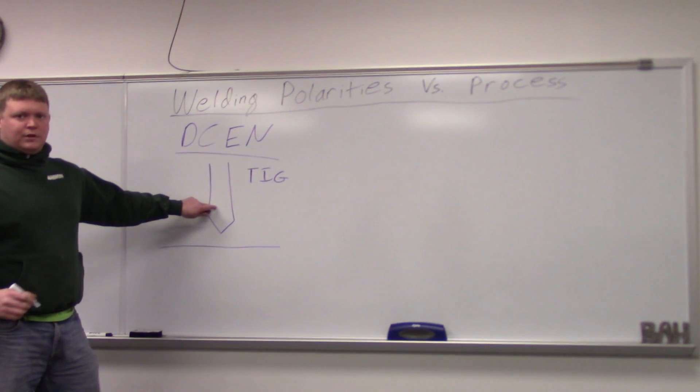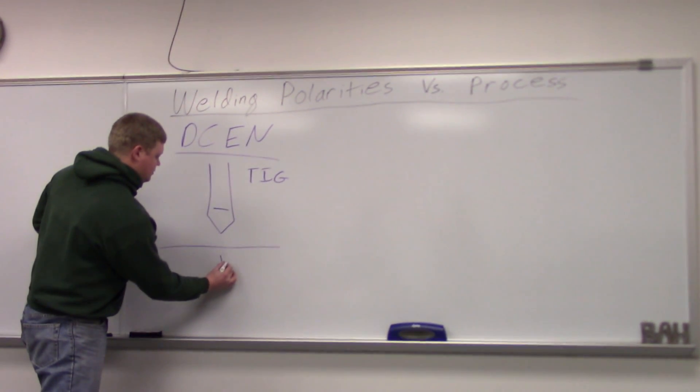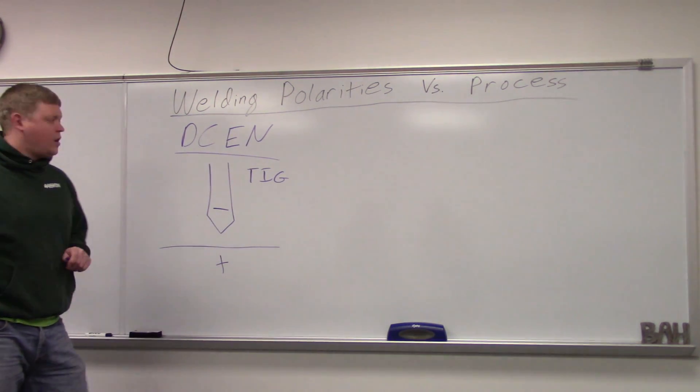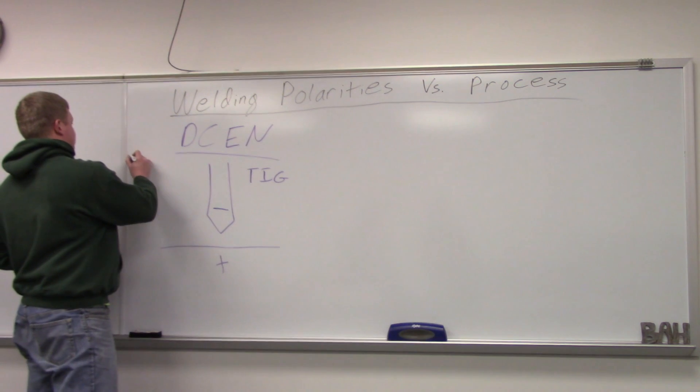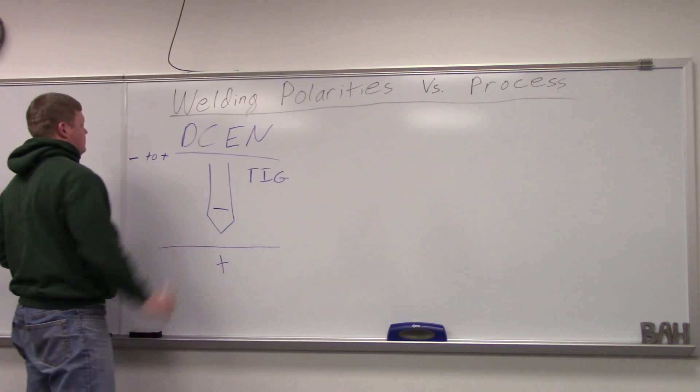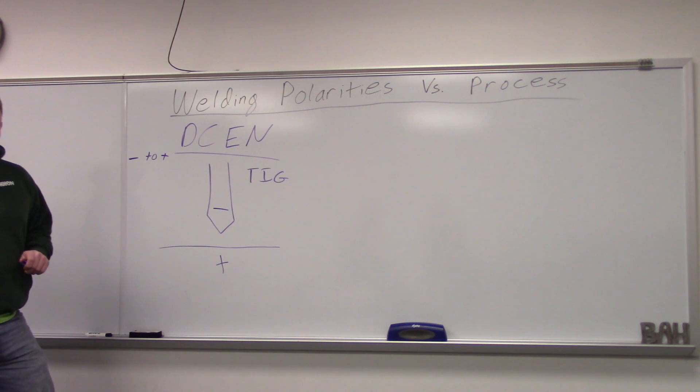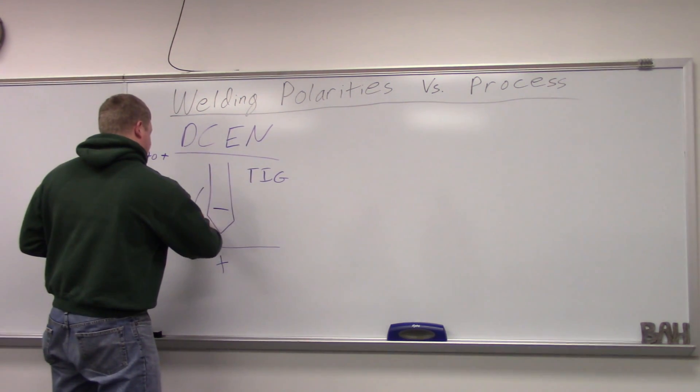So the electrode is going to be negatively charged, a positive charge on your work. Electricity flows from negative to positive. So basically what's going to happen is your electrons are going to get released from your tungsten and go down towards the plate like this.